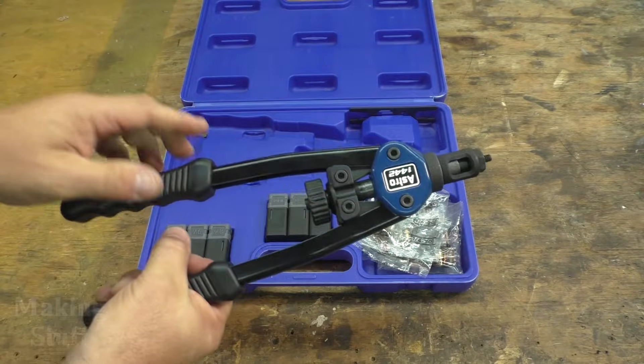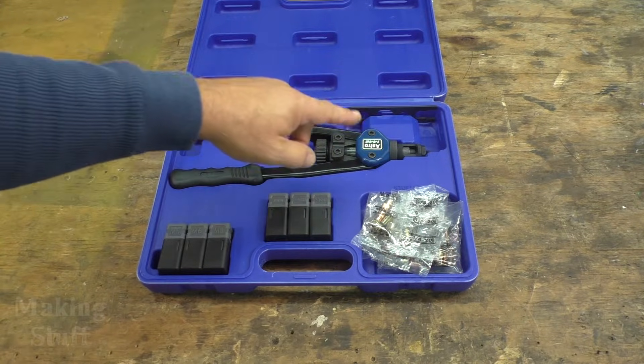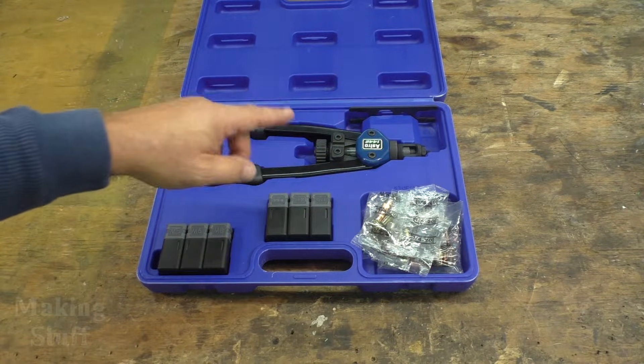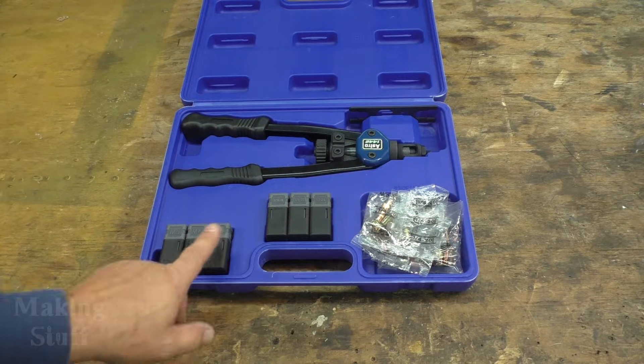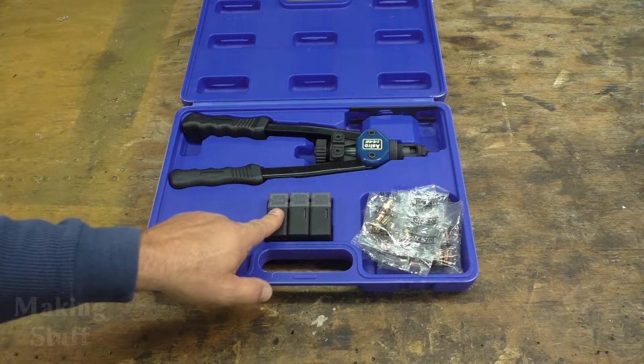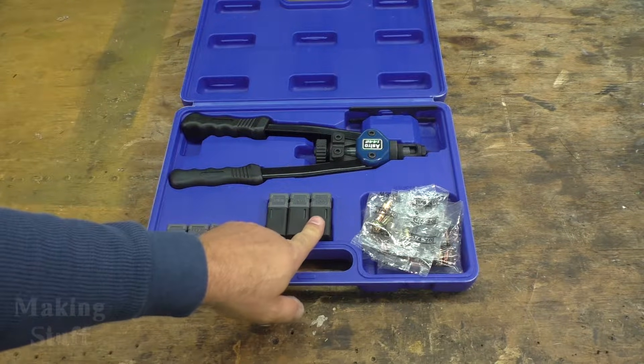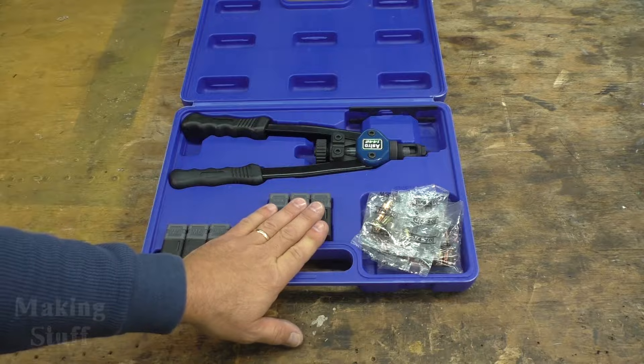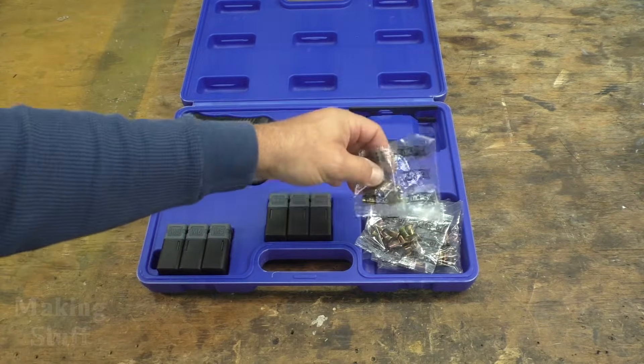Now when you get the rivet nut tool you also want to make sure to get the right size mandrels for the different type thread sizes. Now this one came with three metric. It's got M5, M6, and M8. It also has 5 sixteenths by 18, a quarter by 20, and 10 by 24 imperial measurements and it also came with a small assortment of different sized rivet nuts.